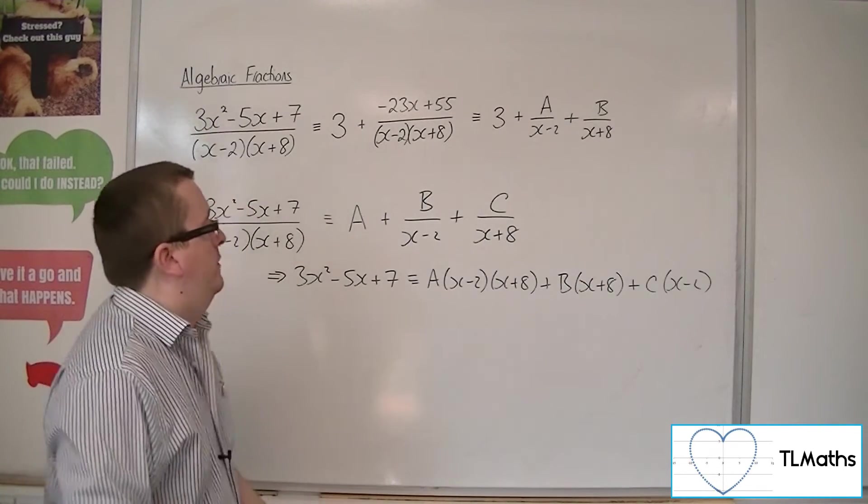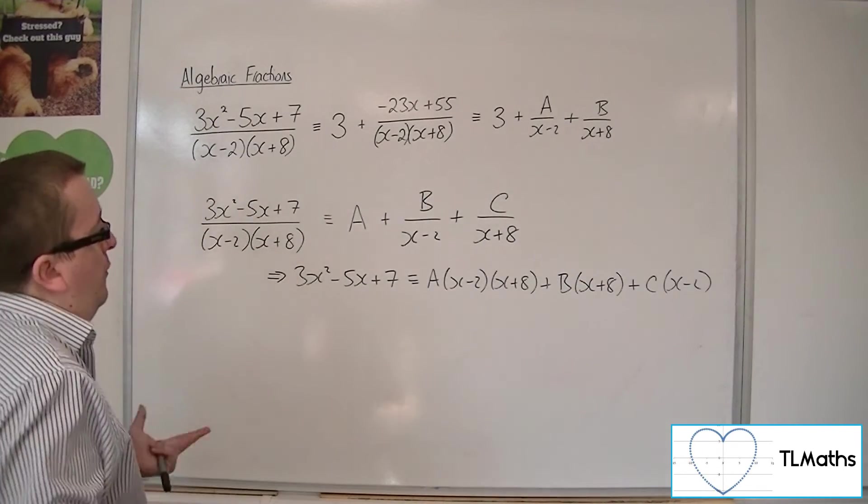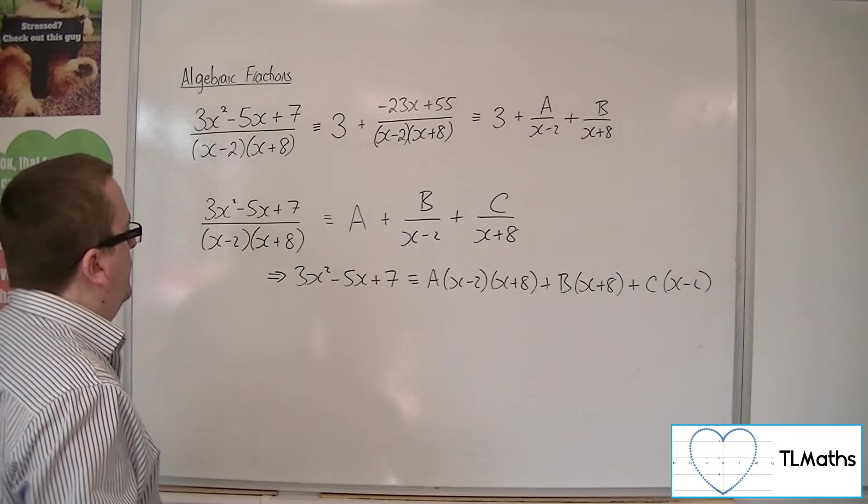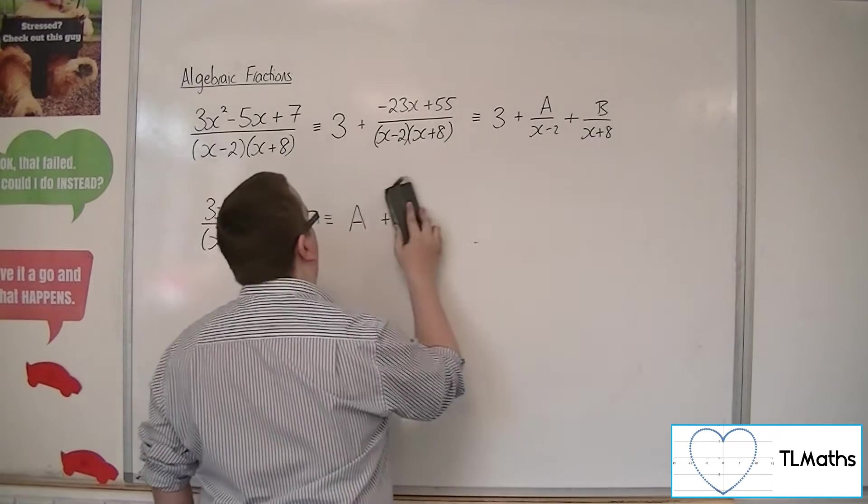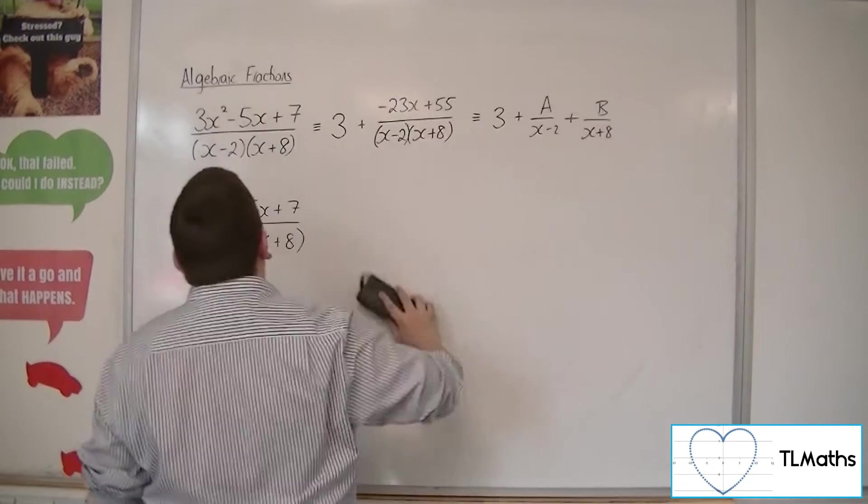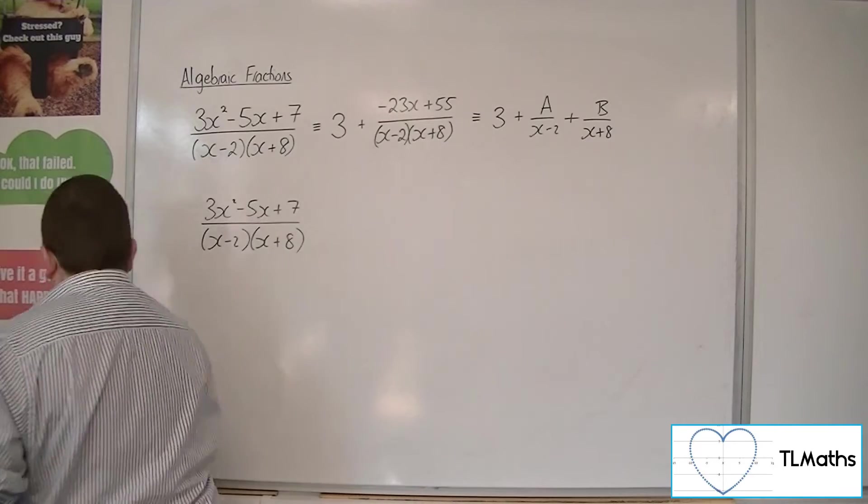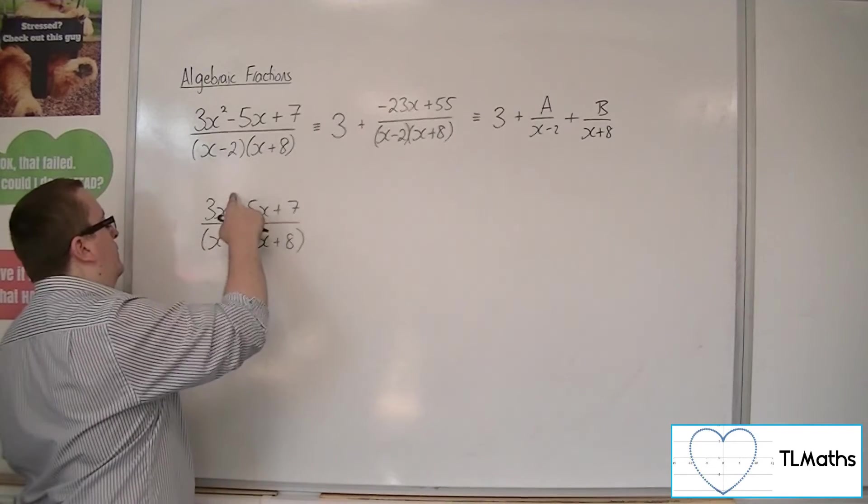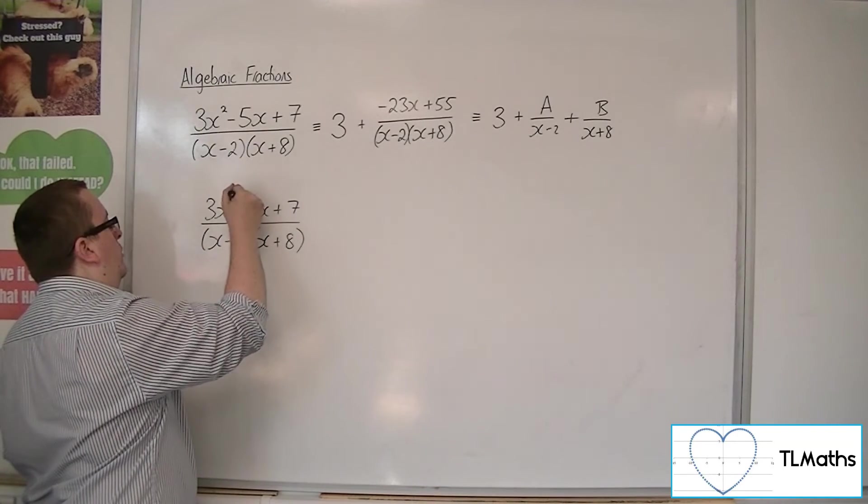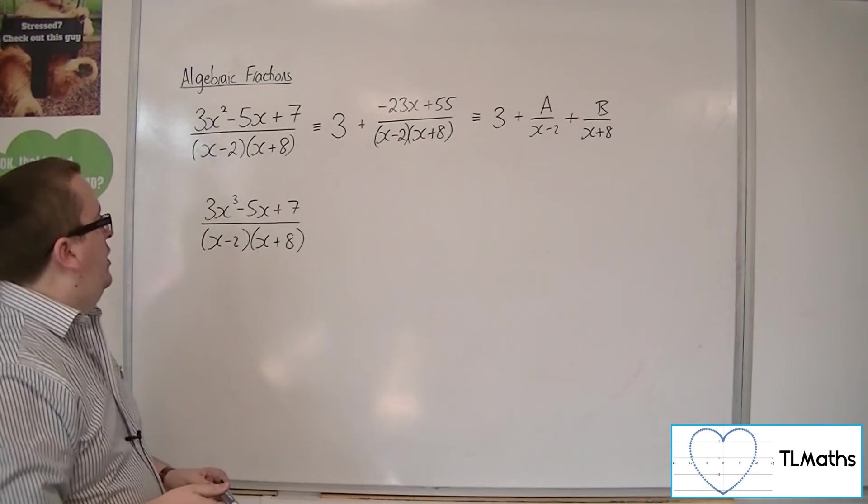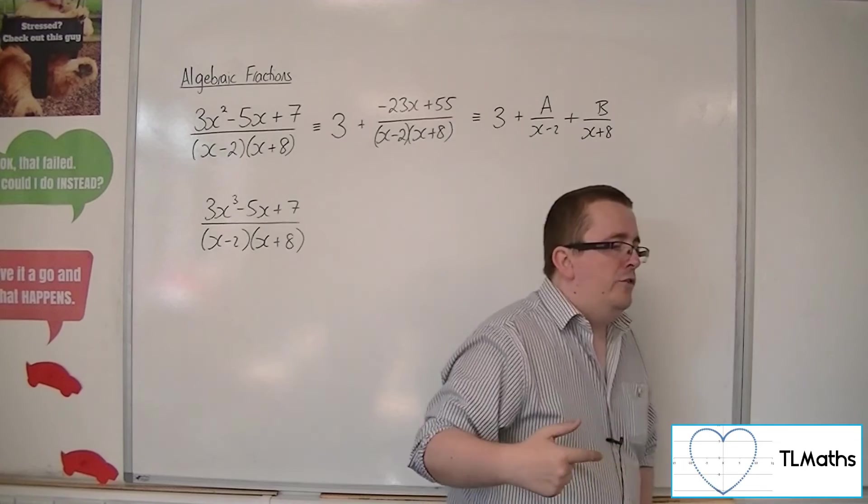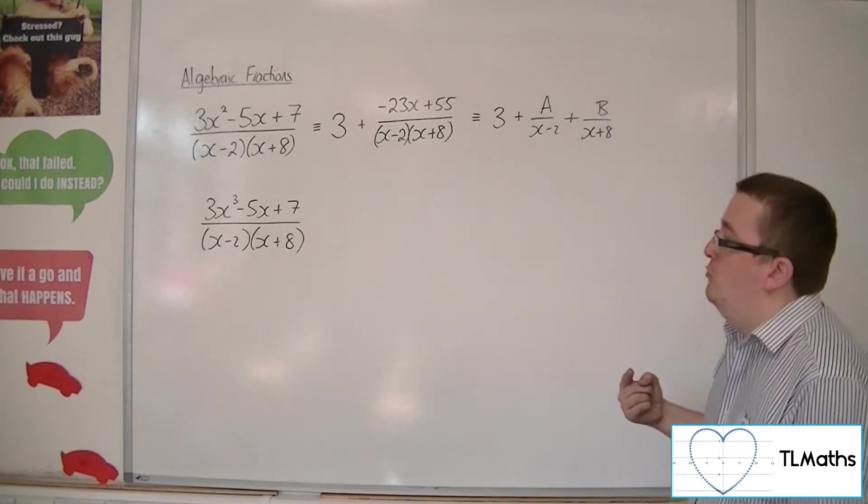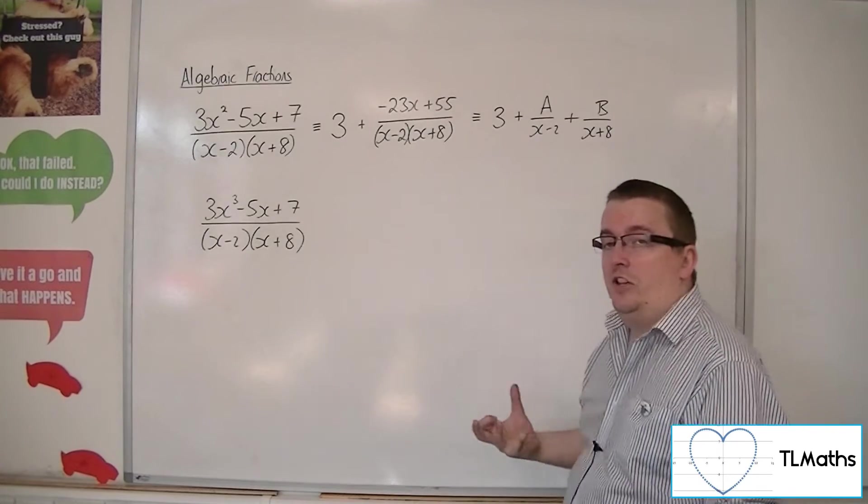So if we ramped this up a little bit, let's say I changed this to x cubed, 3x cubed minus 5x plus 7. So now I've got a cubed term in the numerator and a squared term in the denominator.